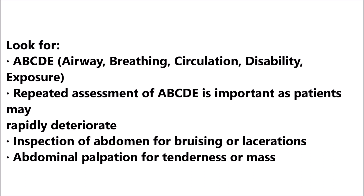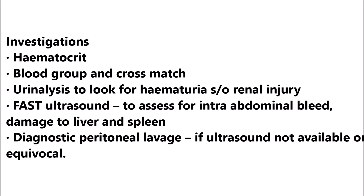Look for ABCDE — that stands for Airway, Breathing, Circulation, Disability, and Exposure. Repeated assessment of ABCDE is important as the patient may rapidly deteriorate. Inspect the abdomen for bruising or lacerations, and palpate for tenderness or mass. Send for investigations including hematocrit, blood group and cross match, urinalysis to look for hematuria suggestive of renal injury, FAST ultrasound to assess for intra-abdominal bleed and damage to liver and spleen. Diagnostic peritoneal lavage is performed if ultrasound is not available or equivocal.